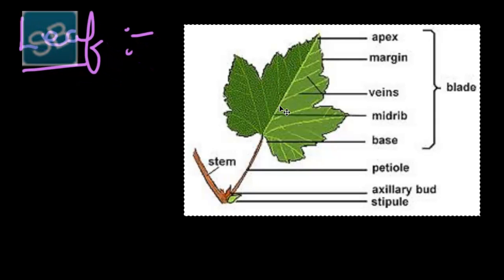A leaf is a flat, green and broad lateral appendage developing from the node of a stem or its branch. It possesses an axillary bud in its axil which has determinate growth.